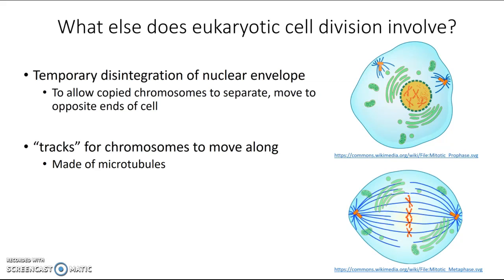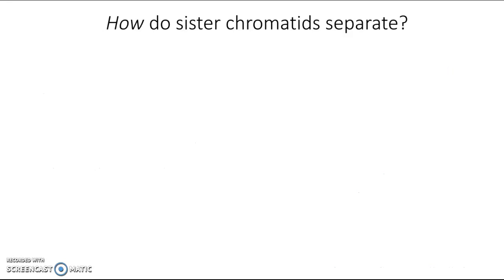These are microtubules here, and this specific structure set up in cell division — this particular shape of microtubules — is known as a spindle. Once the nuclear envelope is out of the way and the spindle is in place, those sister chromatids are ready to separate and move to opposite ends of the cell.